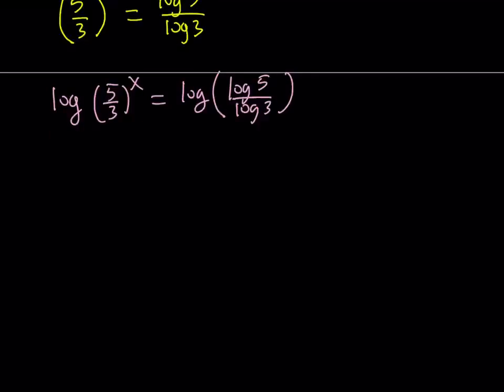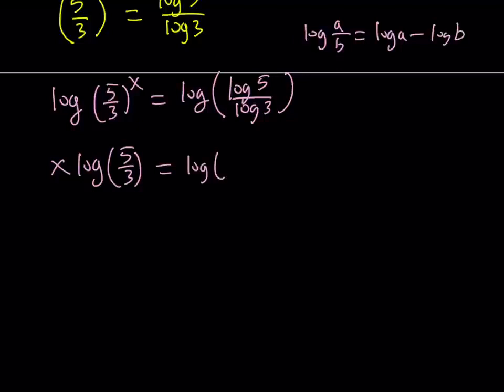Now, since x is an exponent, we can move it forward. And then, from using the property of log a over b can be written as log a minus log b, we can separate these two as log of log 5 minus log of log 3.